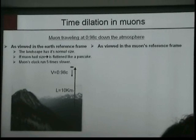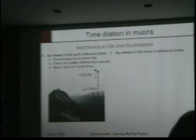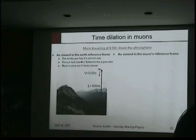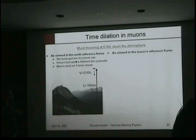So let's see how both things see - how we see, from the base of the mountain, a muon coming down, and how the muon sees coming down to the base of the mountain. So, as you view this in the Earth's reference frame, the landscape has its normal size. If the muon had size, you would see it flattening like a pancake.